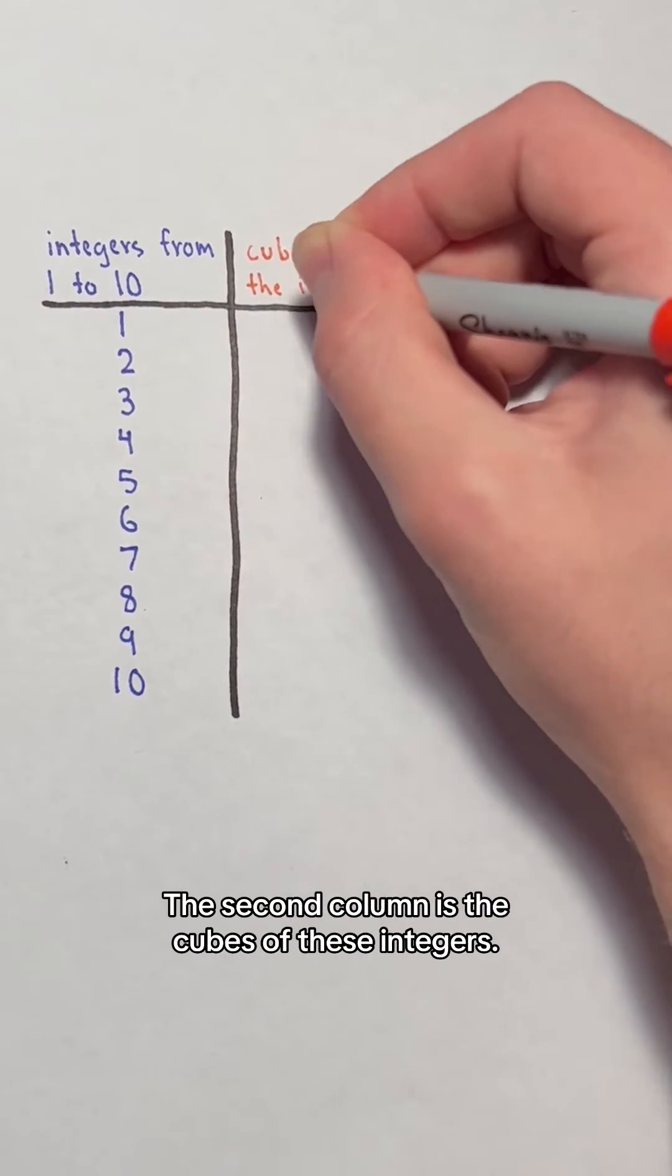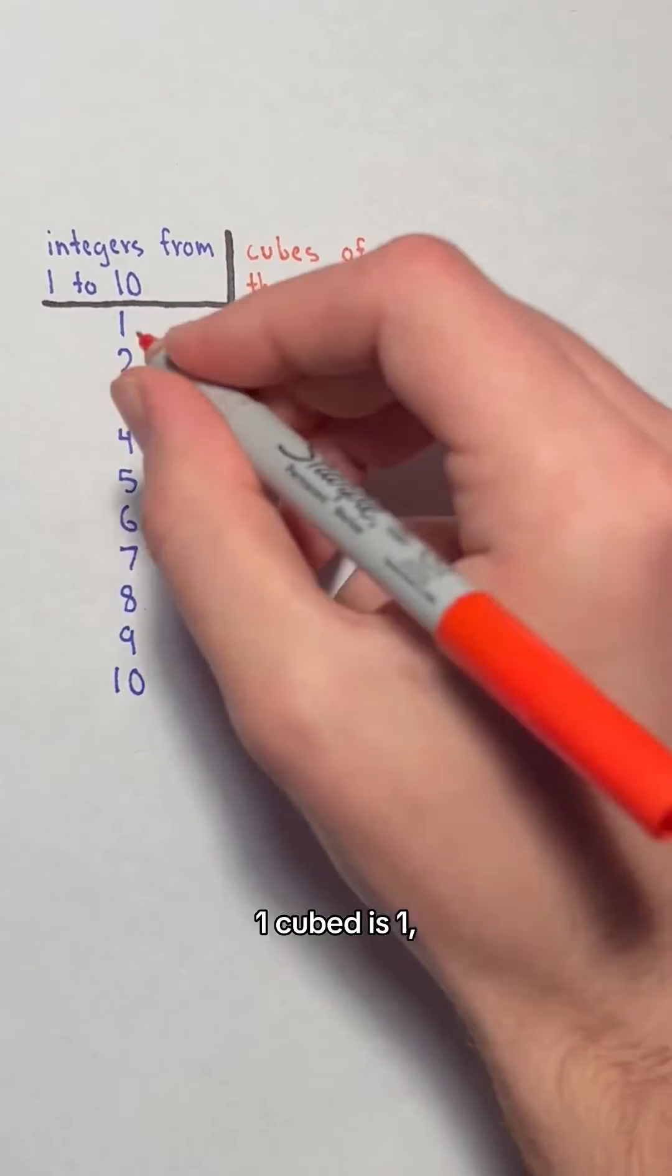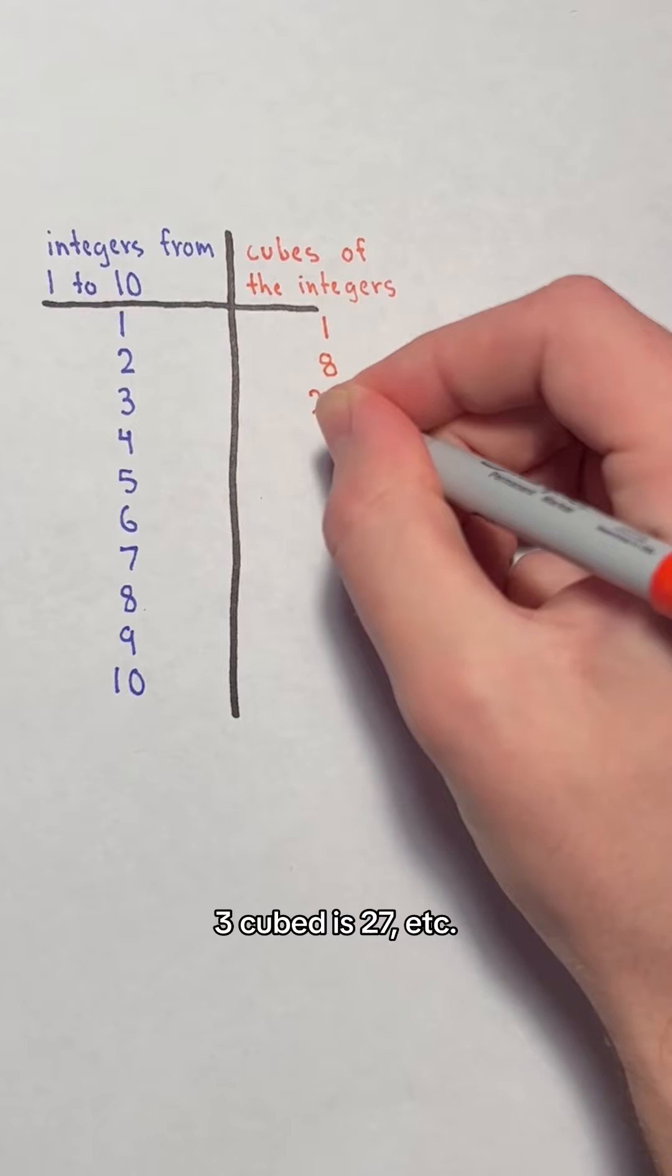The second column is the cubes of these integers. 1 cubed is 1, 2 cubed is 8, 3 cubed is 27, etc.